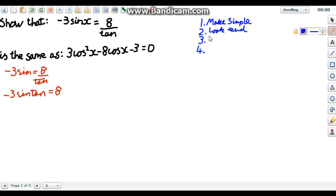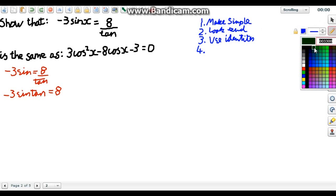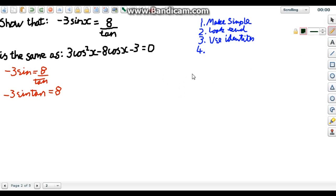So the third step is to use your identities. You should know your identities. If you don't you literally just need to sit down and remember them. The first one is that tan is equal to sin over cos. The second one is that sin squared plus cos squared is equal to 1.